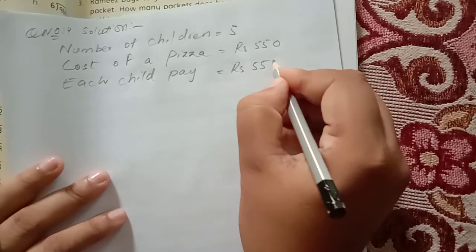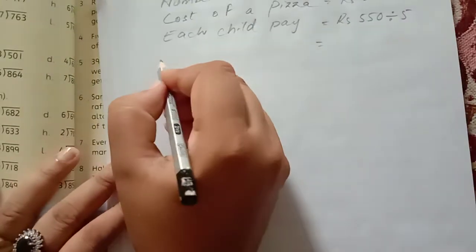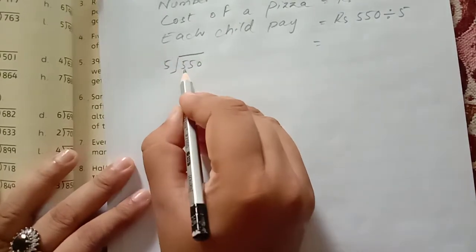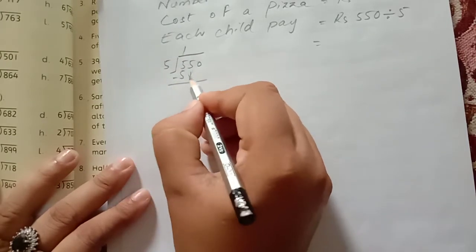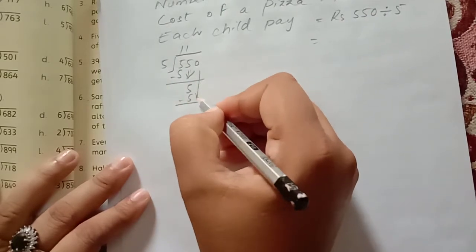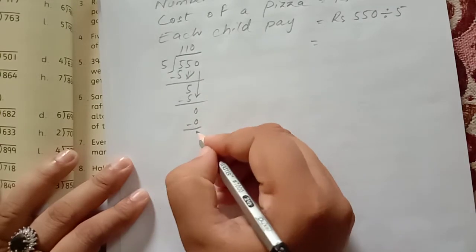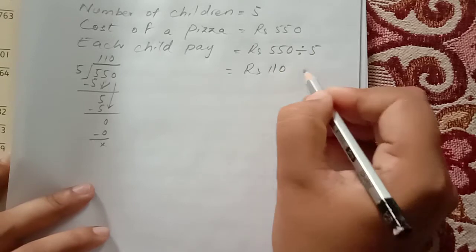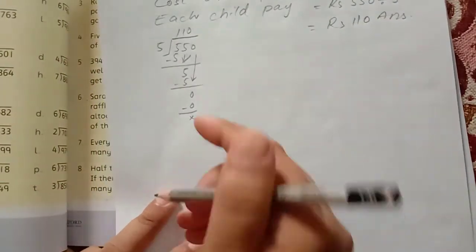550 divided by 5. 5 into 5 is 1, 5 into 5 is 1, minus 5, 0 minus 0, 0. So each child will pay 110. Answer is 110.